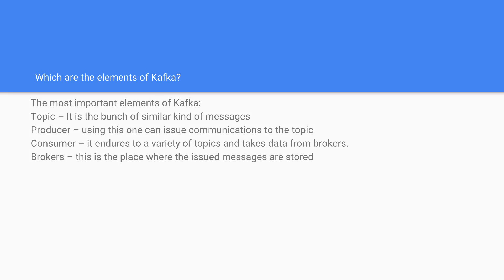What are the most important elements of Kafka? Topic is a bunch of similar kind of messages. Producer — using this one can issue communication to the topic. Consumer — it subscribes to a variety of topics and takes data from the broker.